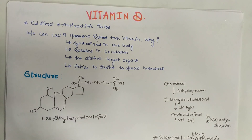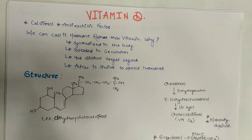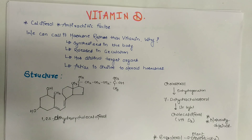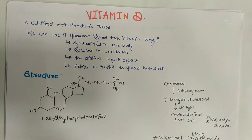The structure shown is that of 1,25-dihydroxycholecalciferol. This is not important from an exam point of view — you don't have to remember this structure. Vitamin D is a sterol compound. There are two forms of vitamin D: the naturally produced vitamin D3, cholecalciferol.